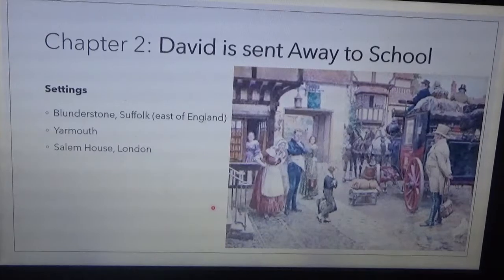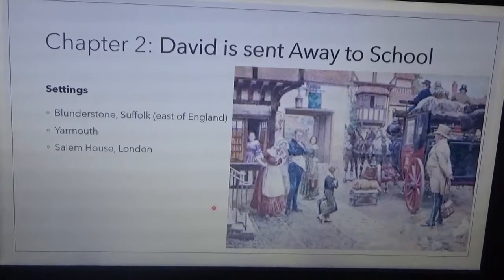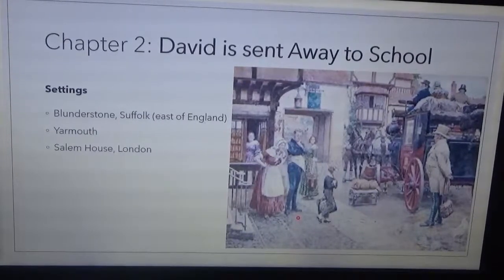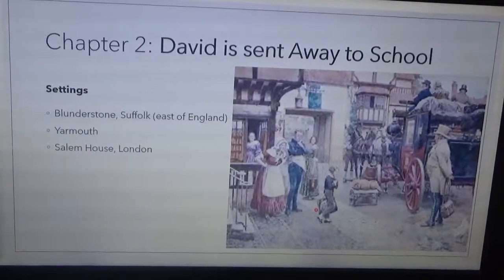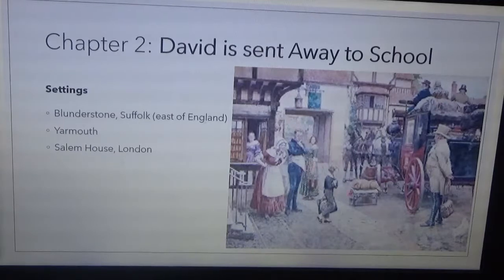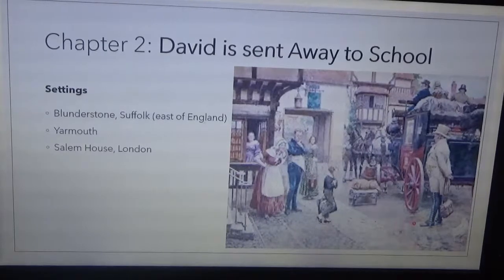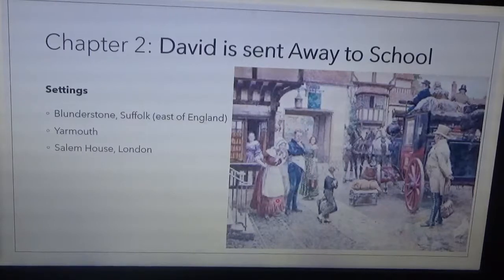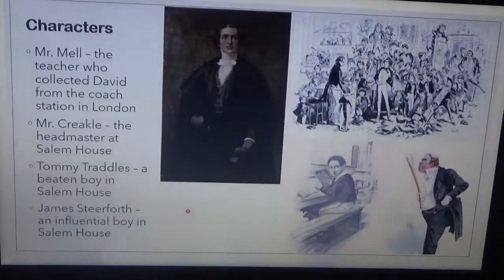Yarmouth is the place where we find the boathouse owned by Daniel Peggotty, where he lives with his two orphans. Daniel is the brother of Clara Peggotty, the nurse of David. In this picture you will see young David — he was about 10 and is about to leave for Salem House. And this is Mr. Barkis, the cart driver who brought him to Yarmouth.